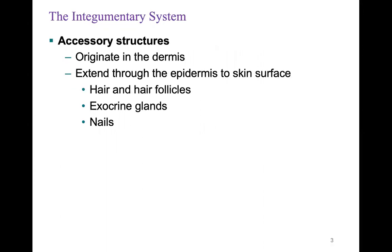The accessory structures will all originate from the dermis and extend to the epidermis and the skin surface. These include your hair and hair follicles, your exocrine glands such as sweat glands and sebaceous glands, and your nails.